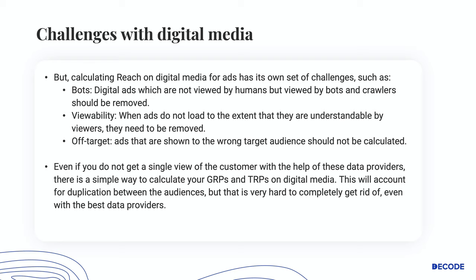Calculating reach on digital media for ads comes with its own set of challenges. First, bots — digital ads viewed by bots and crawlers need to be removed from calculations. Second, viewability — when ads do not load to the extent that they are understandable by viewers, they need to be removed. Third, off-target — ads shown to the wrong target audience should not be counted. Even without a single customer view from data providers, there is a simple way to calculate GRPs and TRPs on digital media, though it will account for some audience duplication.